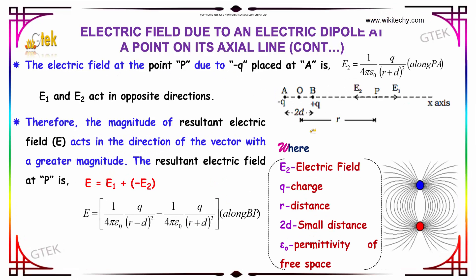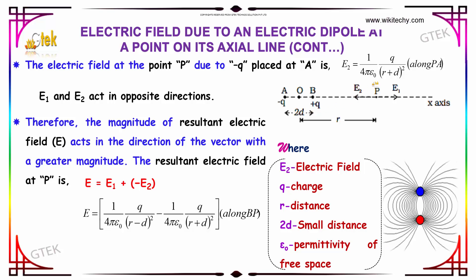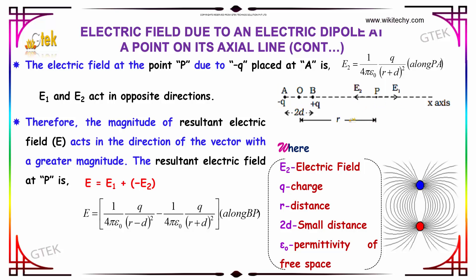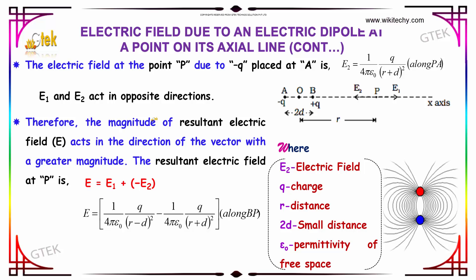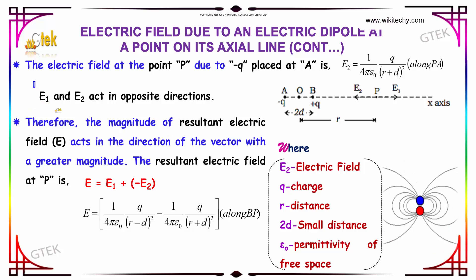Apart from this, the electric field at point P due to minus Q placed at A is defined as E2 equal to 1 divided by 4 pi epsilon naught, into Q divided by R plus D, the whole square, along PA. So this indicates the point PA on the axial line.